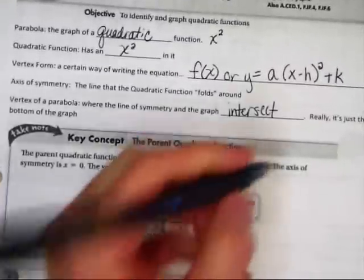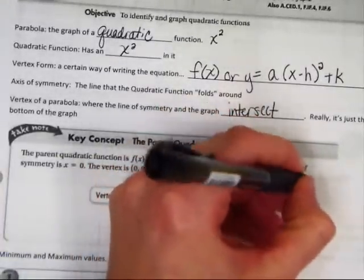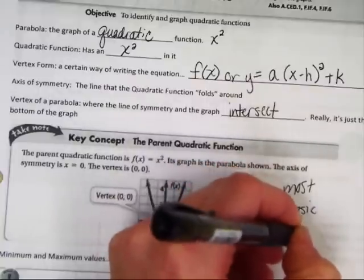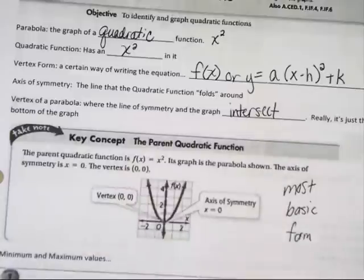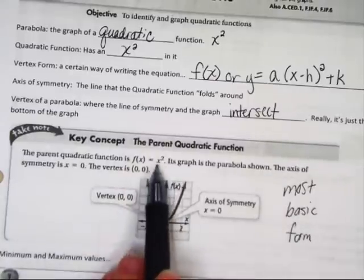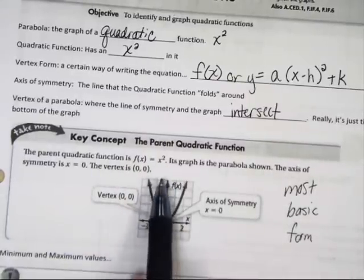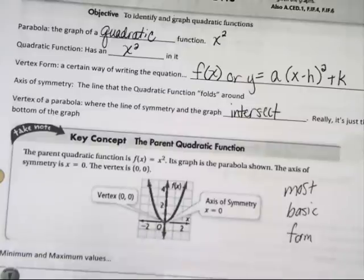Take a look at this as the most basic formula of a quadratic you can get. The most basic form. The reason it's the most basic is because it's just x squared. Notice the axis of symmetry is on the origin, and the vertex is also on the origin. So it's just a u-shaped graph. Moving on.